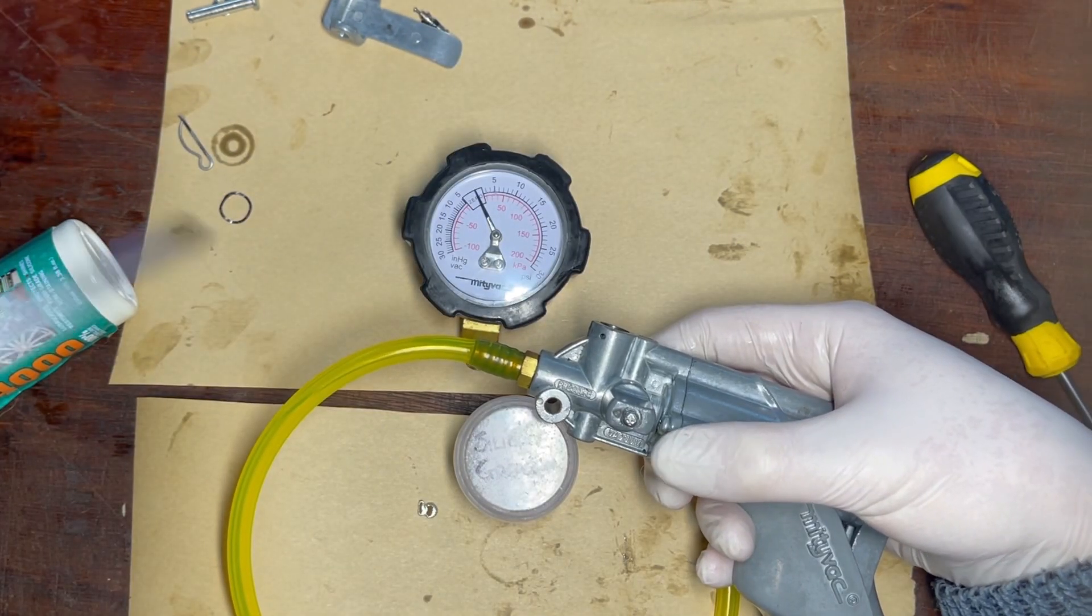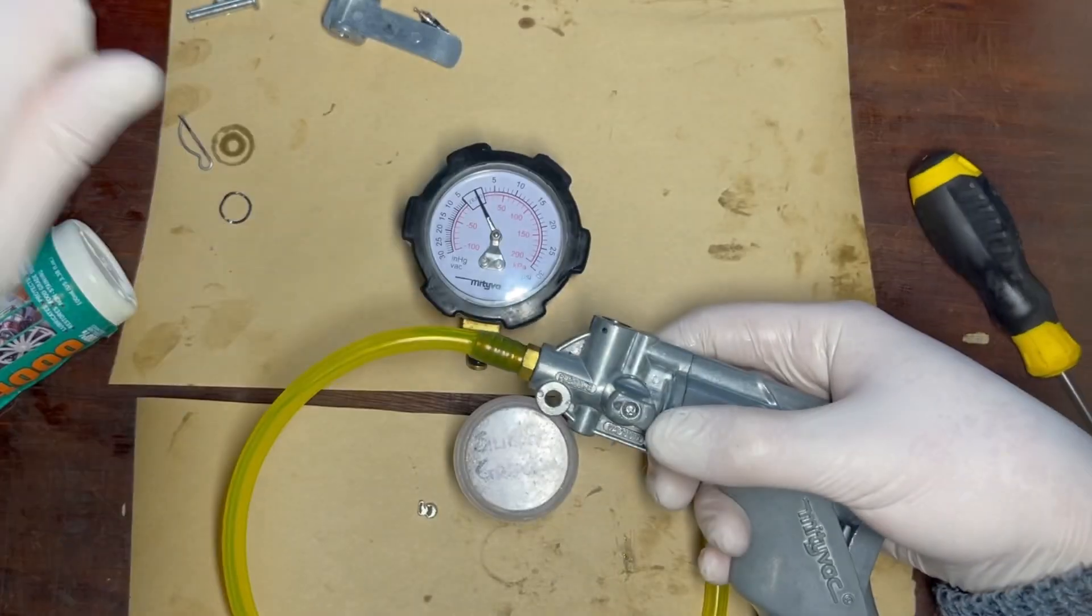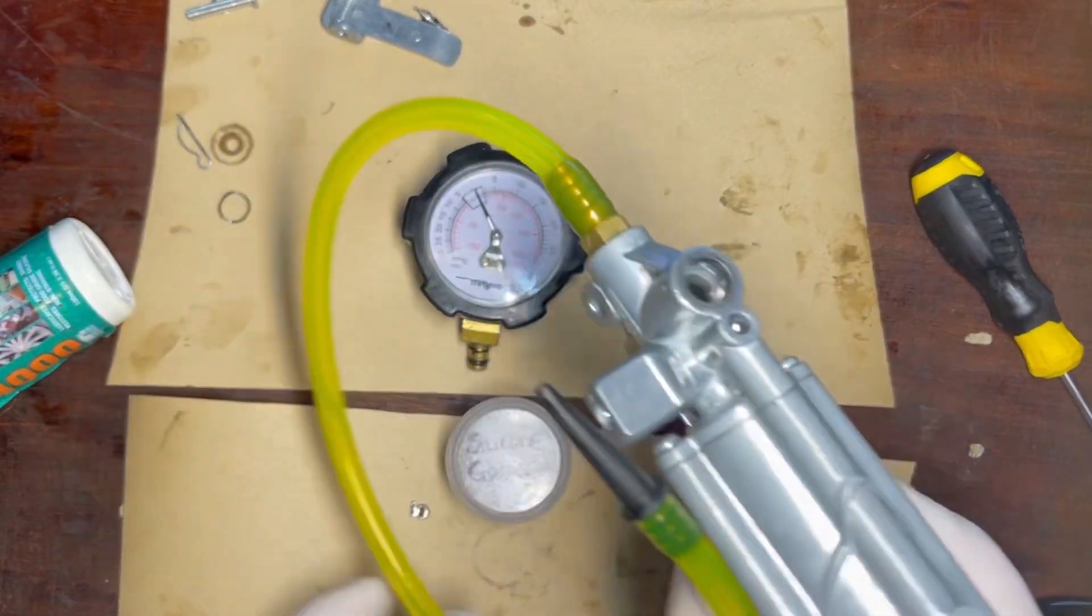And then we have the selector here that goes on. This is a Phillips number one. Just snug is all you need. It's going into plastic, so bear that in mind.